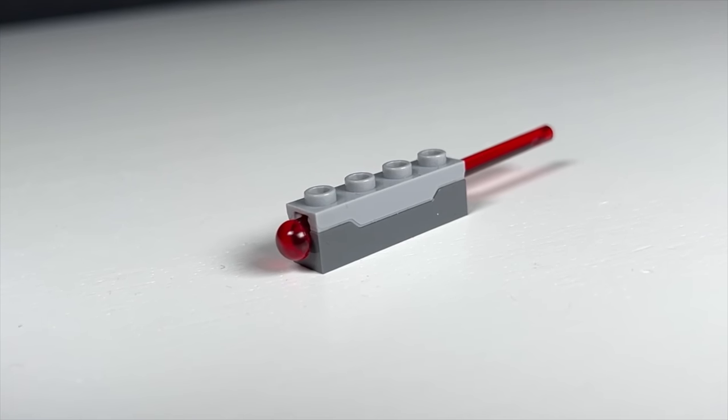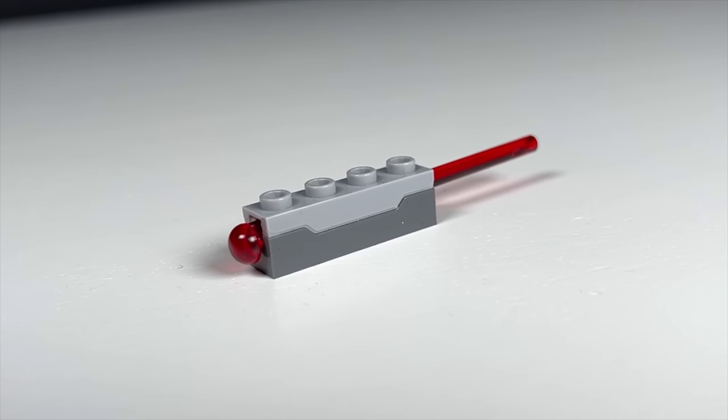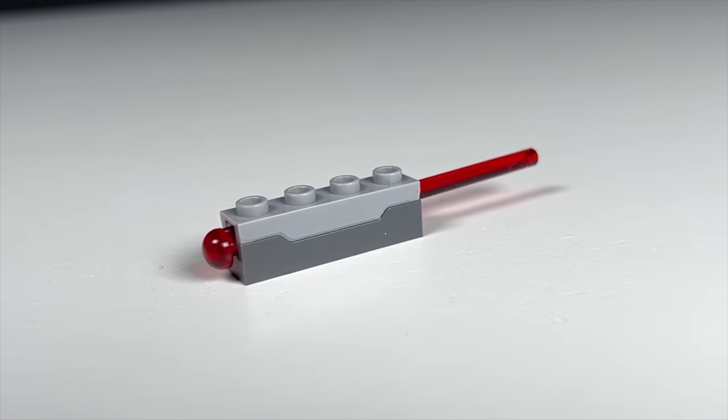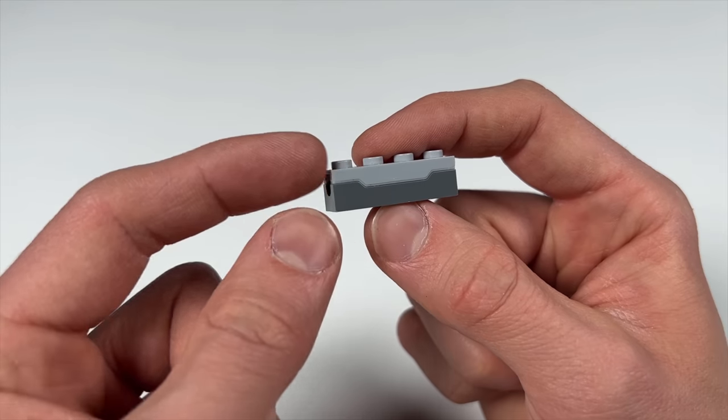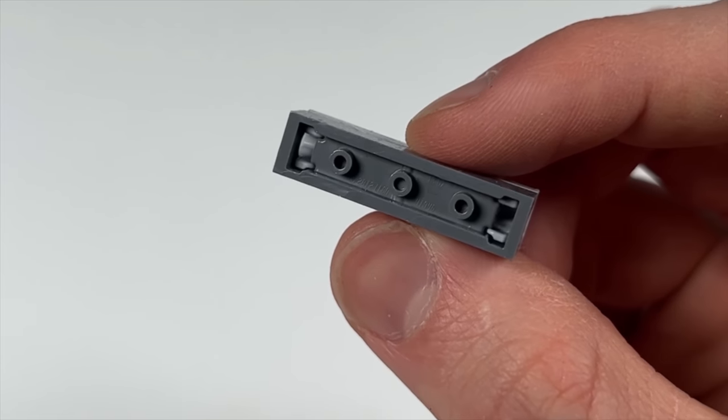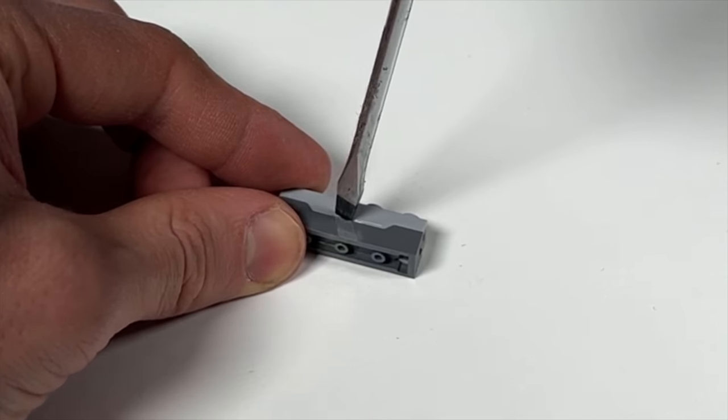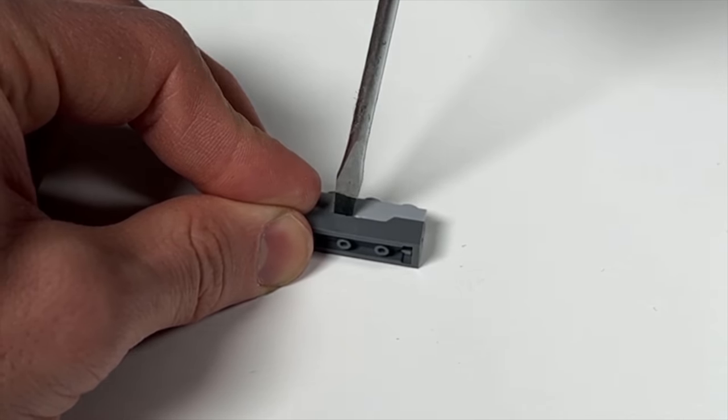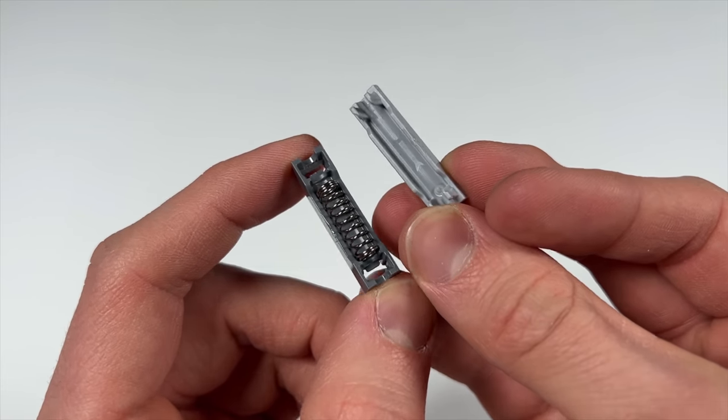But before we start with the crazy part let's start with the basics. How does this shooter work? Well you can see it consists of two different parts which are clipped together. I open that up with a screwdriver and once we had that you can see there is just a spring inside of it and nothing more.